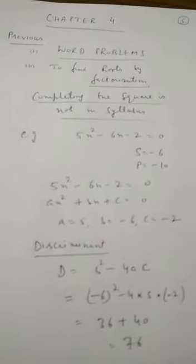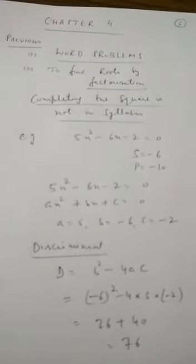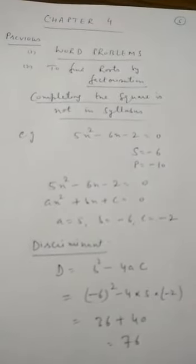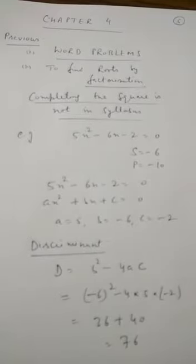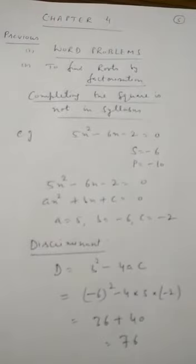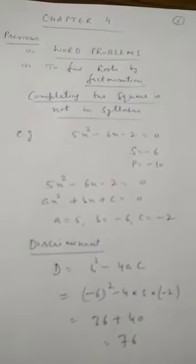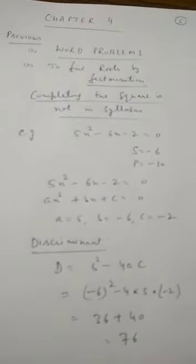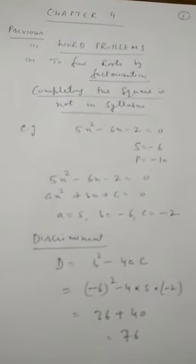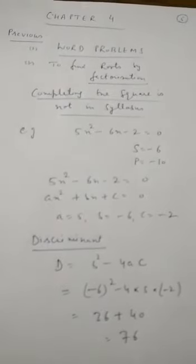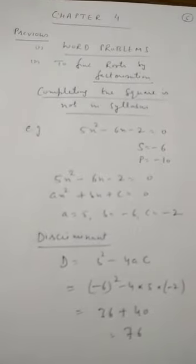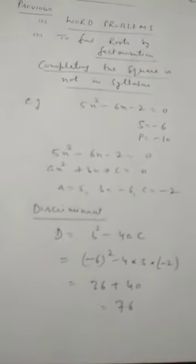So what is the equation now? 5x² minus 6x minus 2 equals 0. If we compare it with the standard form ax² plus bx plus c equals 0, then a is the coefficient of x², which is 5; b is the coefficient of x, which is minus 6; and c is the constant term, which is minus 2. Now we will use the next method to solve a quadratic equation, finding a, b, and c from the given equation.